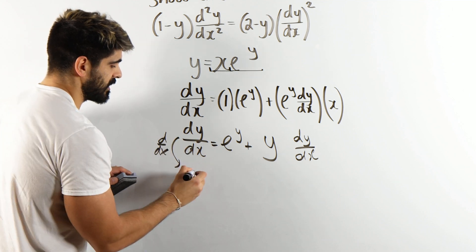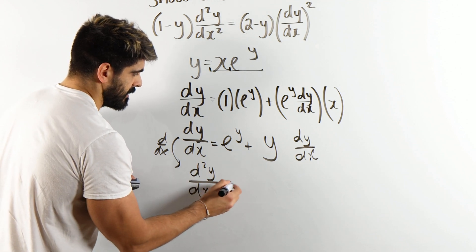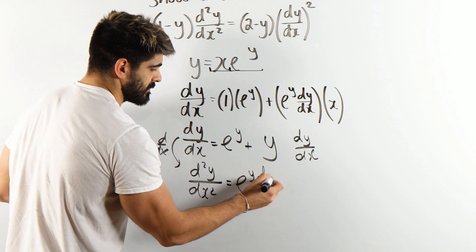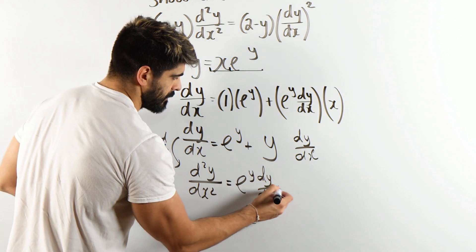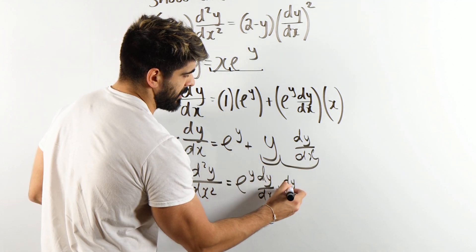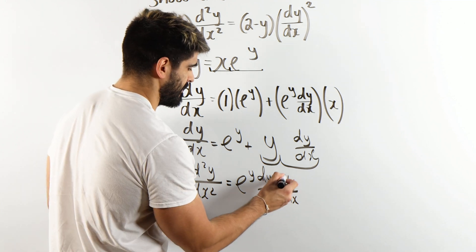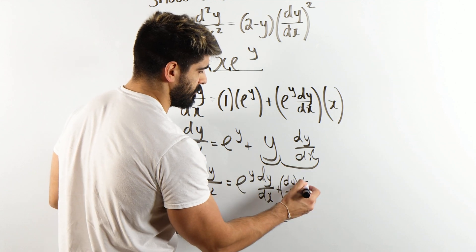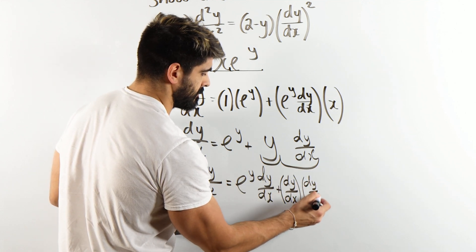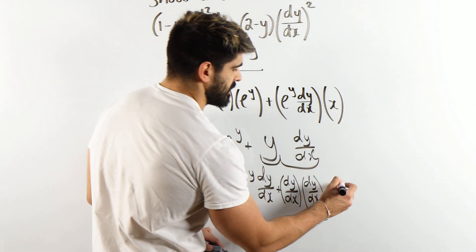Differentiating that again I get d²y/dx², e to the y differentiates to e to the y but I'm going to times it by dy/dx, plus product rule. Differentiate the first term, dy/dx differentiates to - what? dy/dx times the second term which is dy/dx, plus differentiate the second term which is d²y/dx² times the first term y.